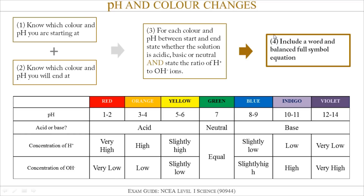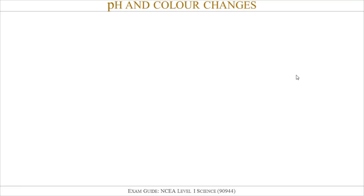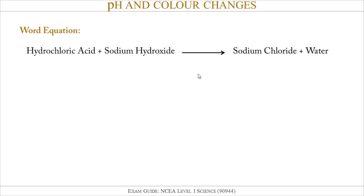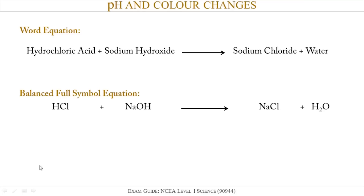Step four: add a word equation and a balanced full chemical equation. The word equation for hydrochloric acid and sodium hydroxide is: acid plus base gives salt and water. Putting in the symbols and checking the balance — in this case it is already balanced — and that finishes the question.